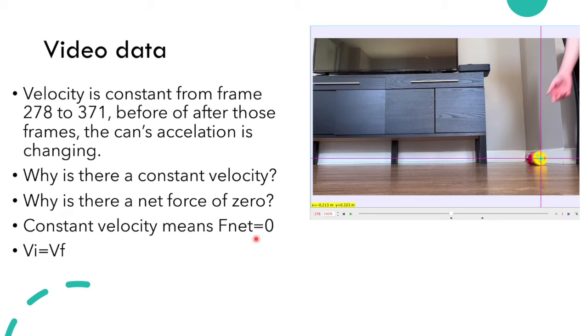So constant velocity means F net equals zero, net force equals zero, so VI velocity initial equals velocity final because there's not a change in velocity, neither a change in momentum or acceleration.